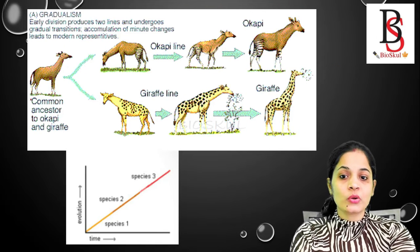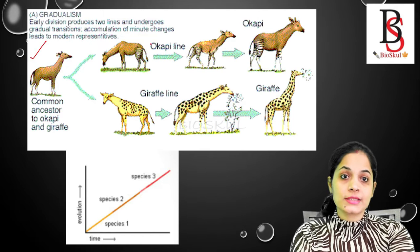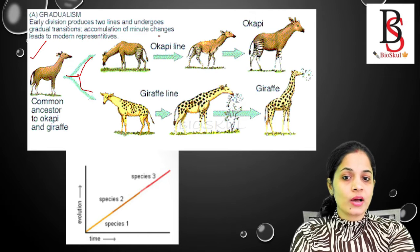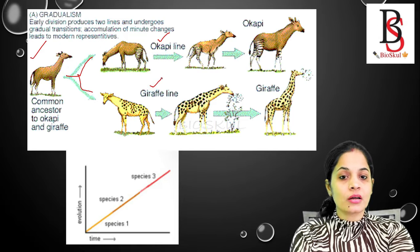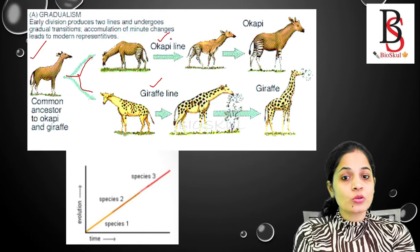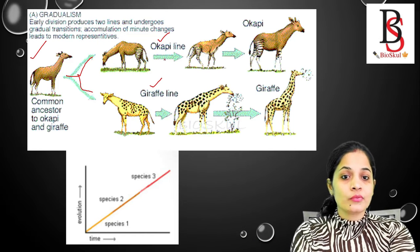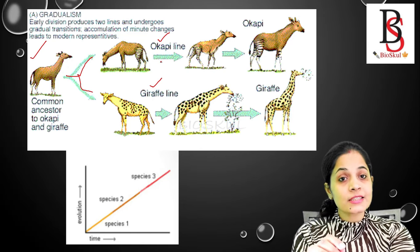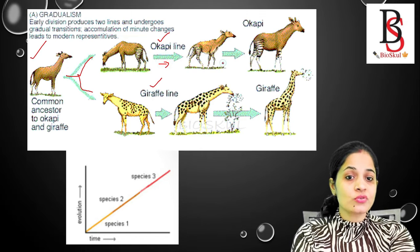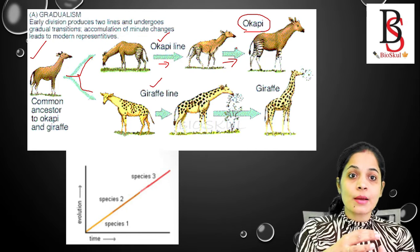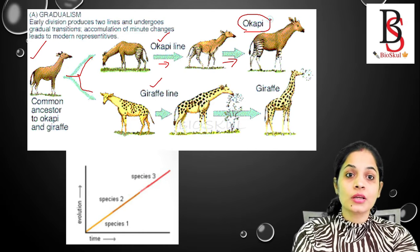Another example represents the common ancestor of both the giraffe and the okapi, and both undergo gradual transitions. A single division produced two lines: one formed the okapi line and the other the giraffe line. Okapi and giraffe are like cousins — okapi is also known as the forest giraffe. The changes in okapi are gradual — slow but constant and consistent over time — and by gradually accumulating changes it forms the modern okapi.